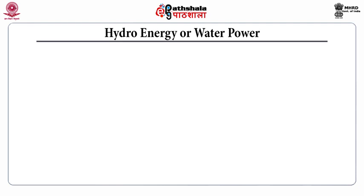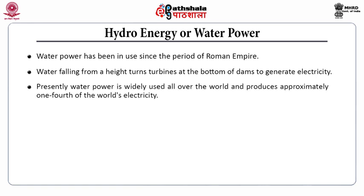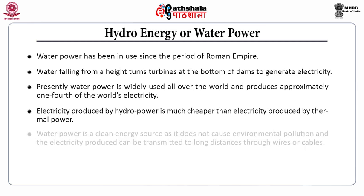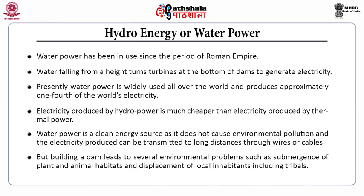The next one is hydro energy or water power. Water power has been in use since ancient times. Water falling from a height turns turbines at the bottom of dams to generate electricity. Presently, water power is widely used all over the world and produces approximately one-fourth of the world's electricity. The electricity produced by hydropower is much cheaper than electricity produced by thermal power. Water power is a clean energy source as it does not cause environmental pollution, and the electricity produced can be transmitted to long distances through wires and cables.